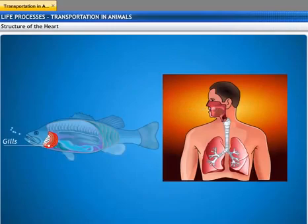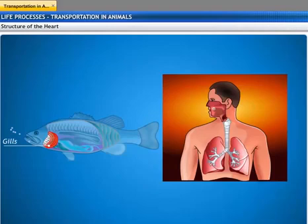Fishes are able to extract 80% of the oxygen contained in water passing over their gills. Human beings, on the other hand, can extract only about 25% of oxygen from inhaled air.